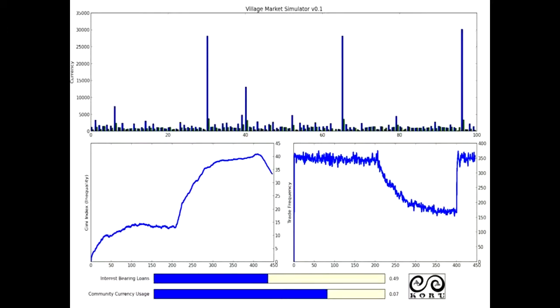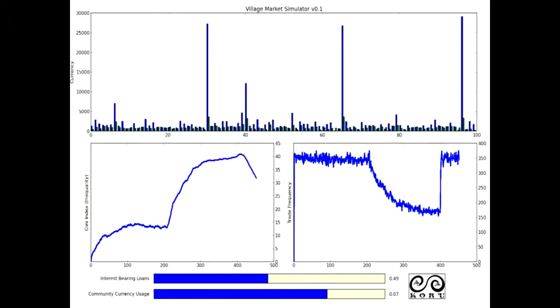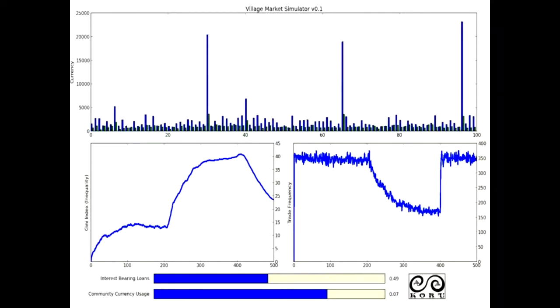Immediately, you can see the trade starting to jump back up on the right. And on the left, you can see the inequality dropping quite a bit. That's because now people are less and less enticed into interest bearing loans. Those people that were making money off of their money, now are making less and they're spending it back into the community. So you get sort of a trickle down effect. You can see trade coming back, inequality going down.